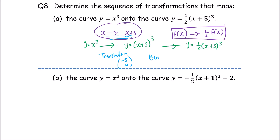Then, next step: multiply by one-half to get half of (x+5) cubed. This is a vertical stretch with scale factor one-half.